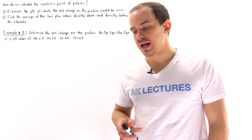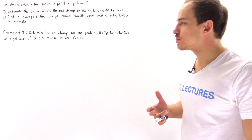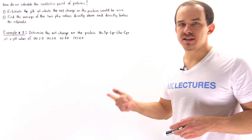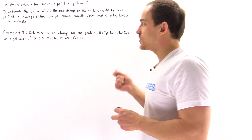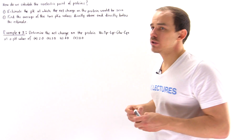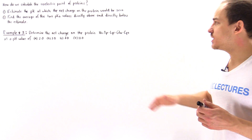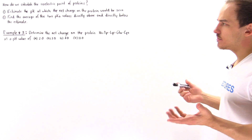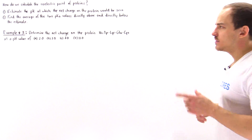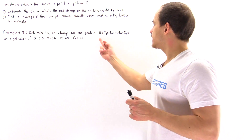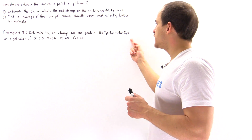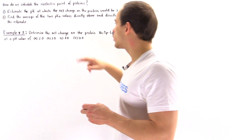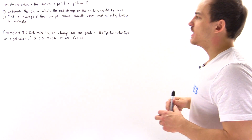Let's continue our discussion on the isoelectric points of proteins. Previously we had examples 1 and 2 in which we determined what the isoelectric point of a protein was. Now let's look at example 3, where we want to determine the net charge on a protein consisting of five amino acids at four different pH values.